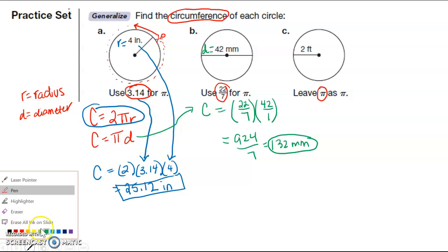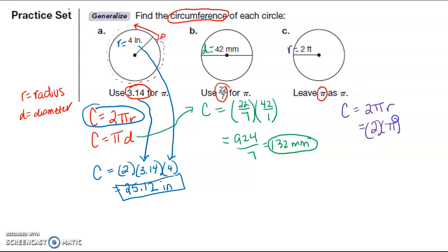And then the last one, I have the radius is equal to 2, so I'm going to use circumference is equal to 2 pi r, and I'm leaving pi as pi, so let me plug in what I have. I have 2 times pi times 2. So I'm going to go ahead and multiply 2 times 2, so I get 4 pi. That's it. You just leave pi as the symbol that it is.